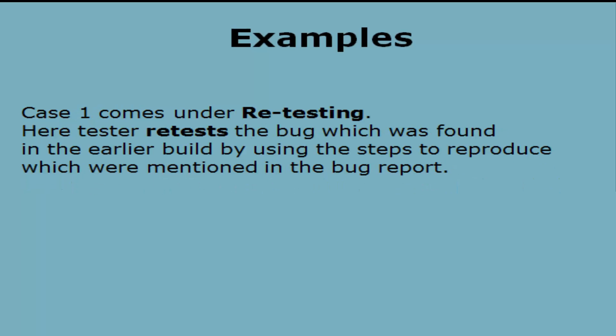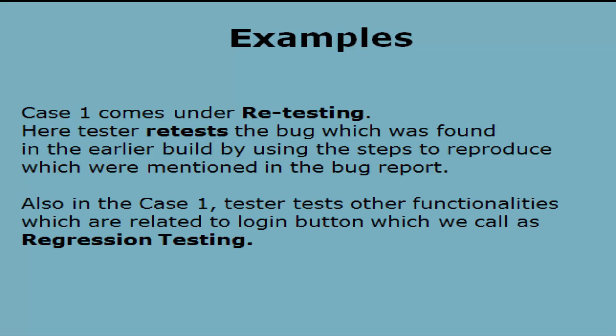Case 1 comes under retesting. Here the tester retests the bug which was found in the earlier build by using the steps to reproduce which were mentioned in the bug report. Also in Case 1, the tester tests other functionalities which are related to the login button — this is what we call regression testing.